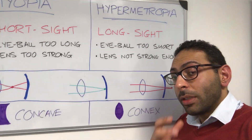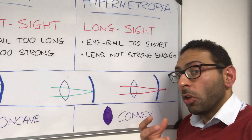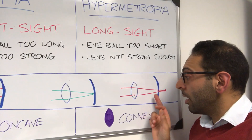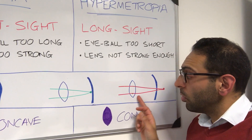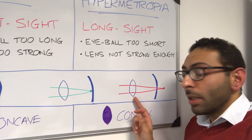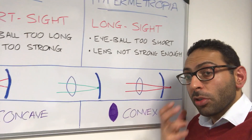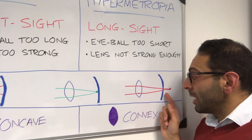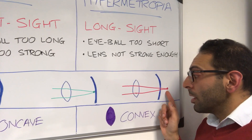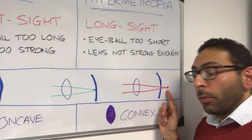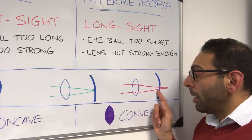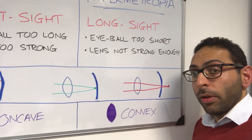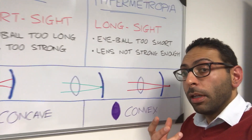In long-sightedness, the opposite happens: either the eyeball is too short or the lens itself is not strong enough, so the focusing happens beyond the retina rather than right at that point — and again you get that blurred vision.